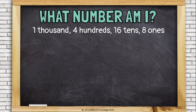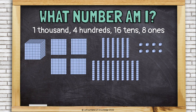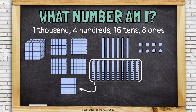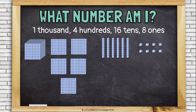Let's try another. This time I have 1 thousand, 4 hundreds, 16 tens, and 8 ones. I can't put a 16 in the tens place. I know I need to regroup or bundle 10 of those tens together to make another 100. Now I can see my number: 1,568.